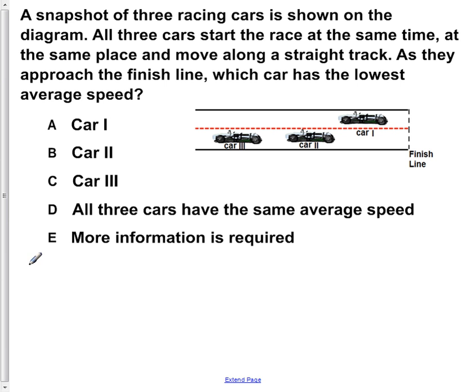To answer this question, you have to remember the equation for the average speed of an object is given by the change in your position over the total time of its trip. So, in order to have the smallest average speed, you have to have the smallest numerator possible.